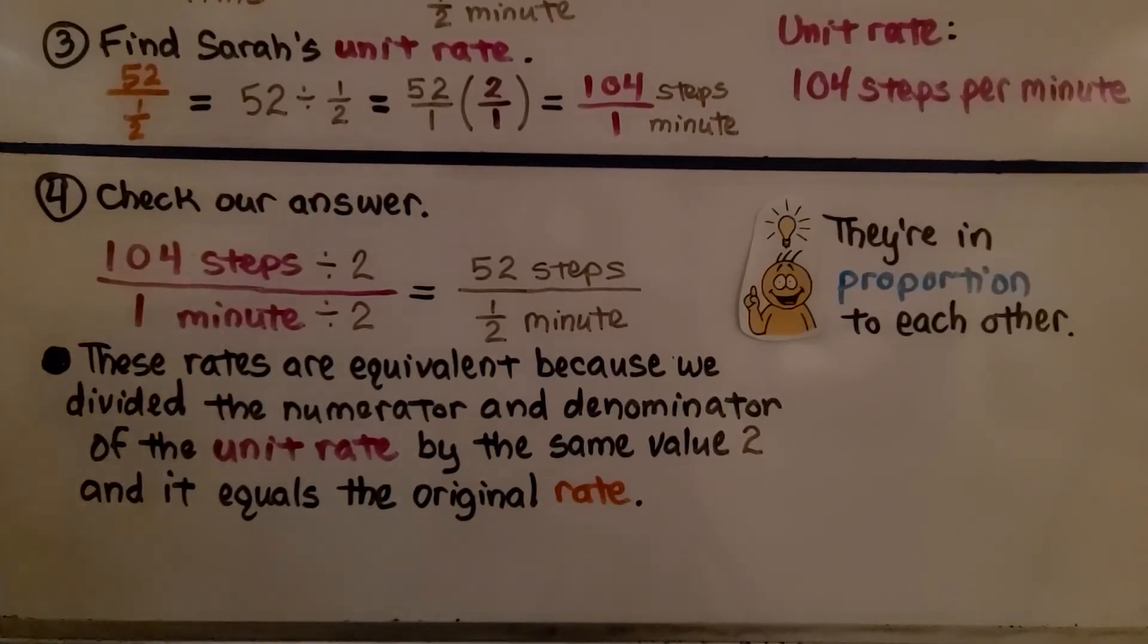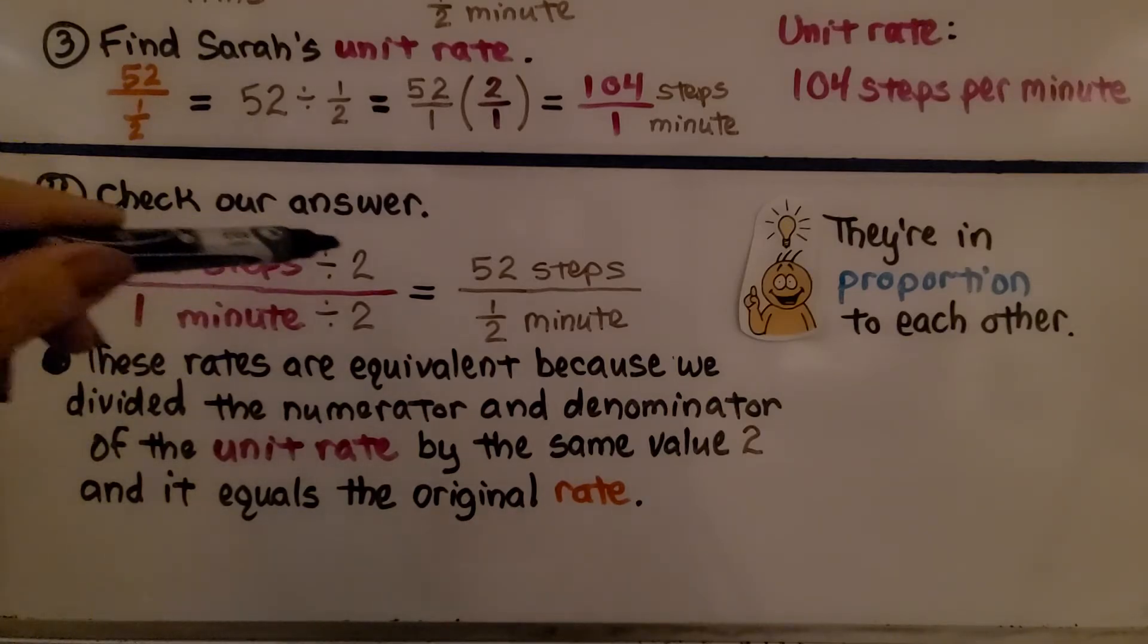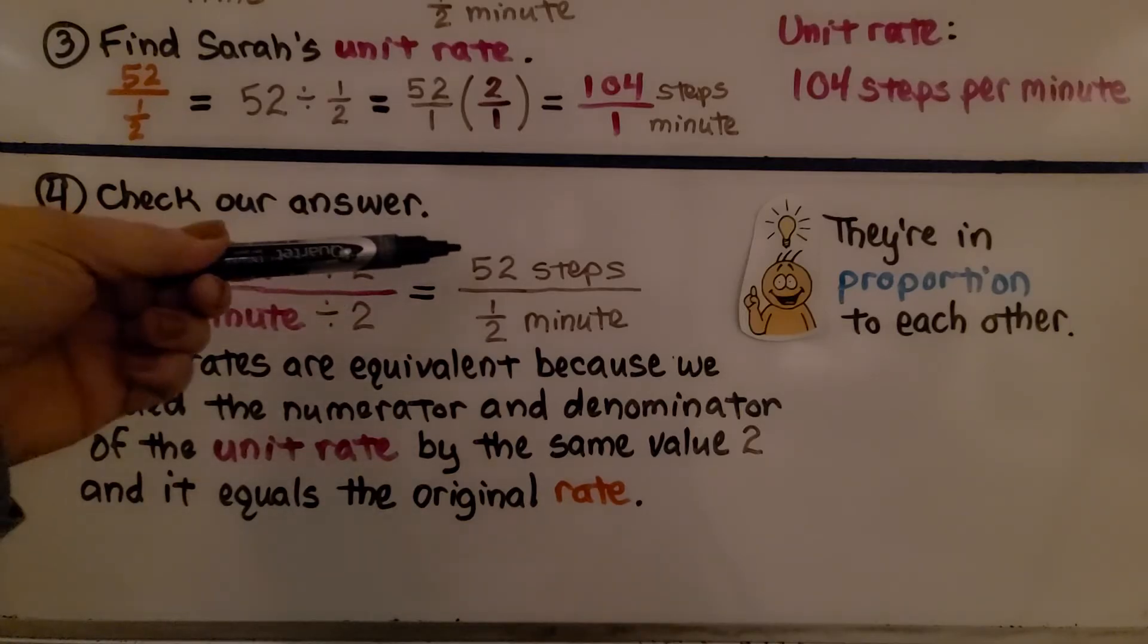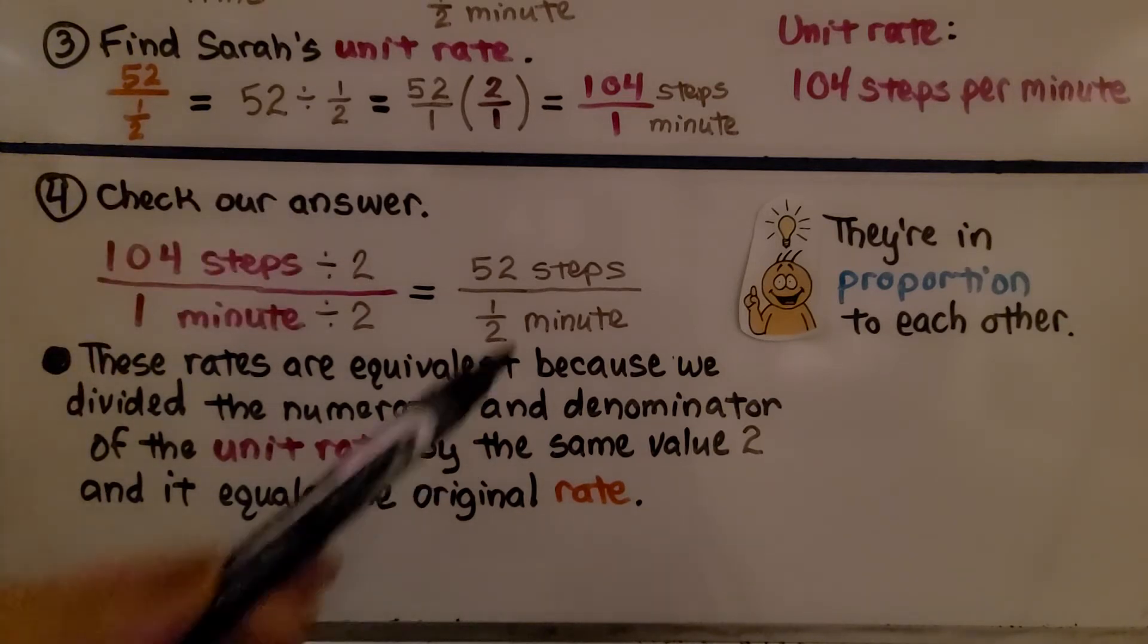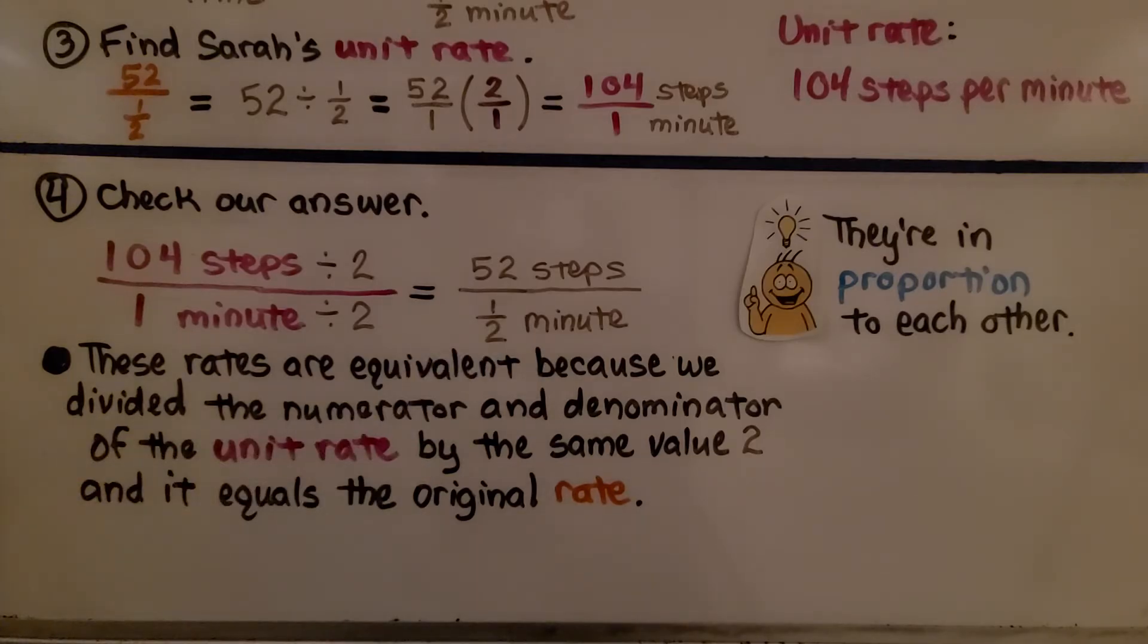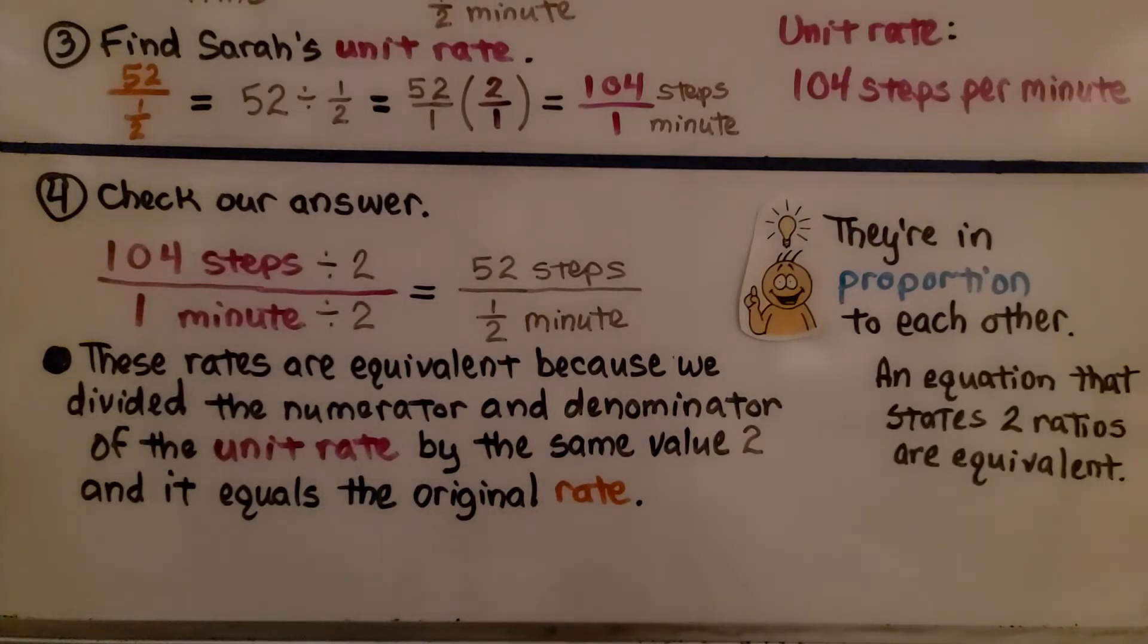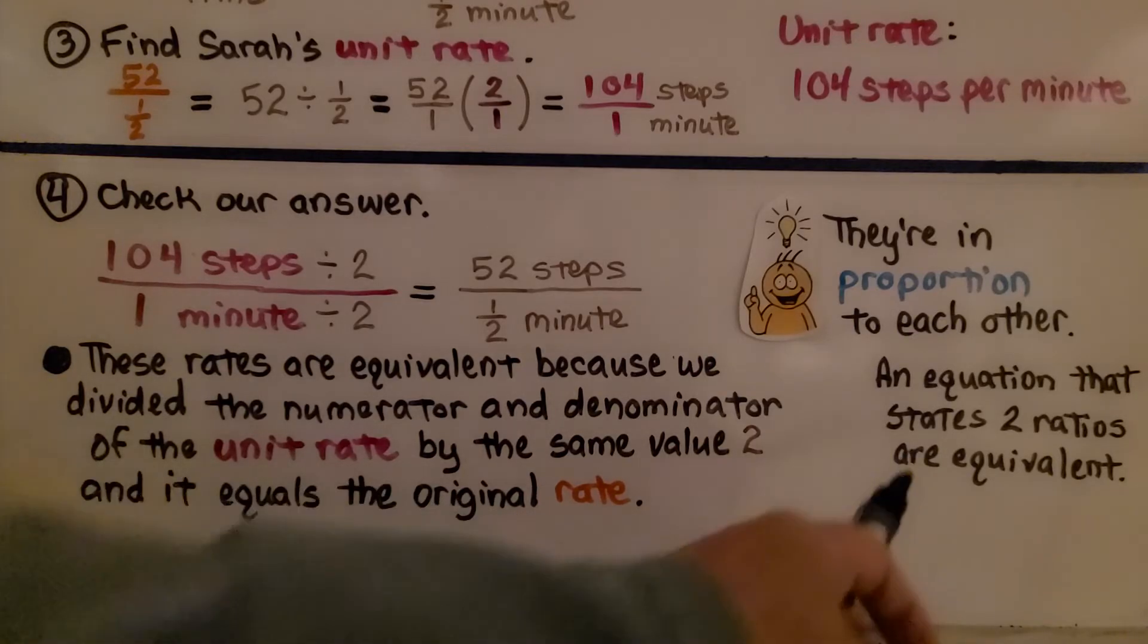We can check our answer. We have 104 steps in one minute. We can divide the 104 by two and the minute by two and get 52 steps in half minute. These rates are equivalent because we divided the numerator and denominator of the unit rate by the same value two. And it equals the original rate of 52 steps in half minute. They're in proportion to each other. Do you remember from sixth grade math chapter seven, we learned about proportions. A proportion is an equation that states that two ratios are equivalent.